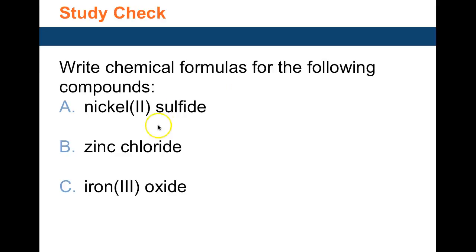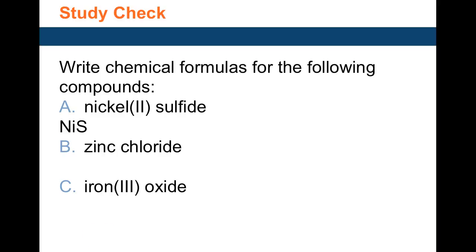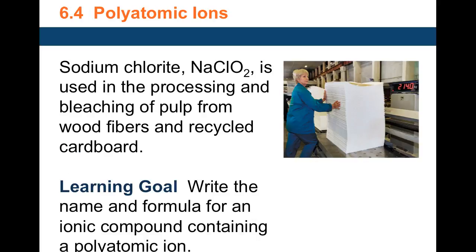Practice problems: nickel(II) sulfide — Ni is 2+, sulfide is 2−, so NiS. Zinc chloride — zinc is 2+, chloride is 1−, so ZnCl2. Iron(III) oxide — iron is 3+, oxide is 2−, crisscross gives Fe2O3. This ends section 6.3 and the next video will continue with section 6.4.